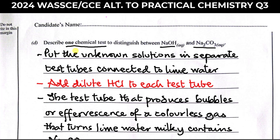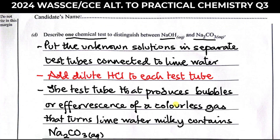The last question asks us to describe one chemical test to distinguish between sodium hydroxide and sodium trioxocarbonate. The test is simple: add an acid to each in separate test tubes. Sodium hydroxide will not give any visible reaction, but sodium trioxocarbonate will produce effervescence due to the evolution of CO₂. Remember, you are asked to describe, not just state observations — so be detailed. Place the unknown solutions in separate test tubes connected to lime water, then add dilute HCl to each. The test tube that produces bubbles of a colorless gas that turns lime water milky contains sodium trioxocarbonate.